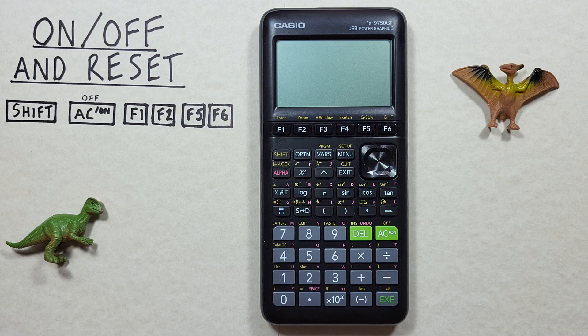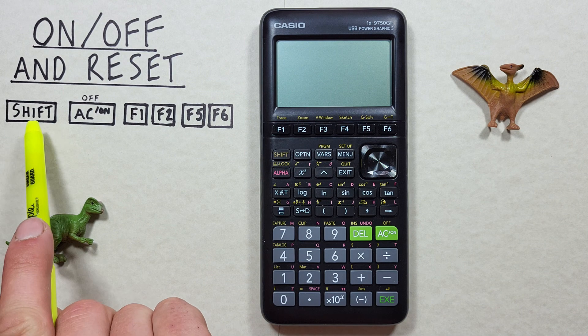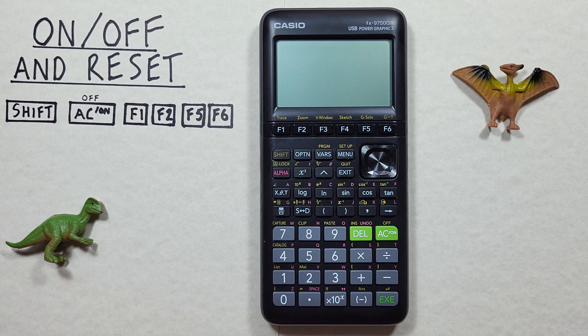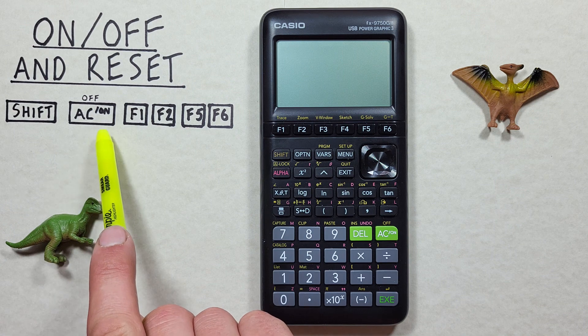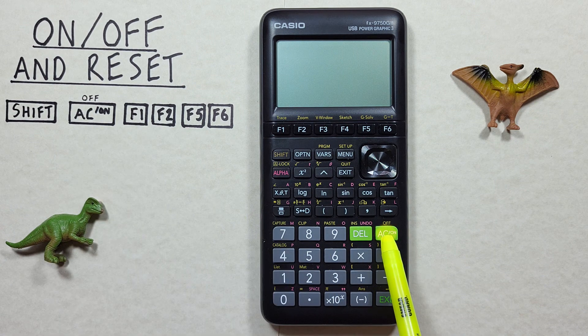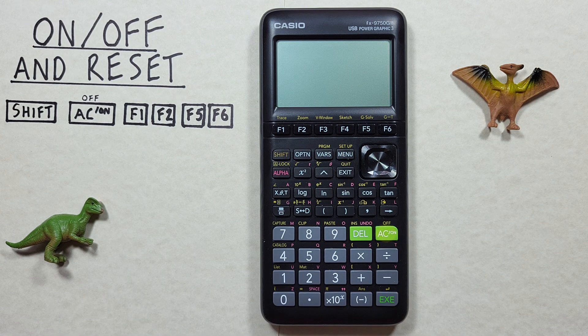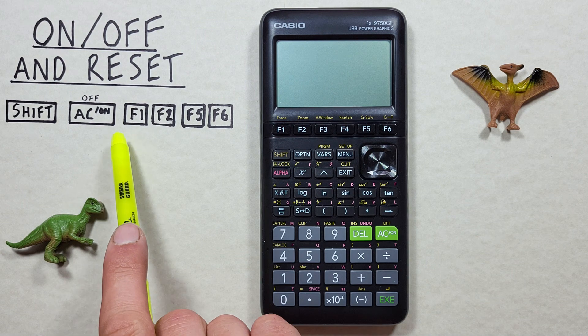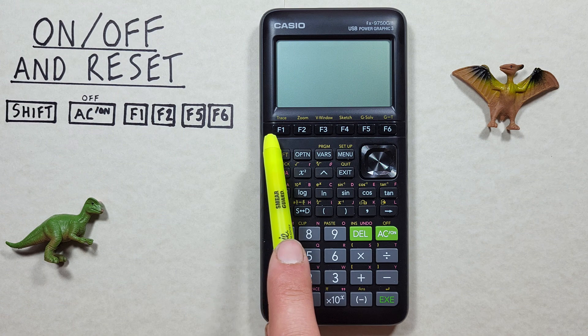To do this we'll use the shift key that looks like this located here, the clear or on key with the shift function of off that looks like this located here, and the F1, F2, F5, and F6 keys that look like this located across the top here.